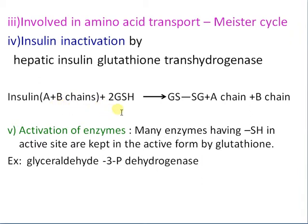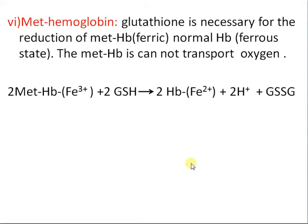Many enzymes have sulfhydryl groups at their active sites, and glutathione is needed to keep these sites active. One enzyme involved is glyceraldehyde-3-phosphate dehydrogenase. Glutathione is also necessary for the reduction of methemoglobin (ferric form) back to normal hemoglobin (ferrous state), since methemoglobin cannot transport oxygen.